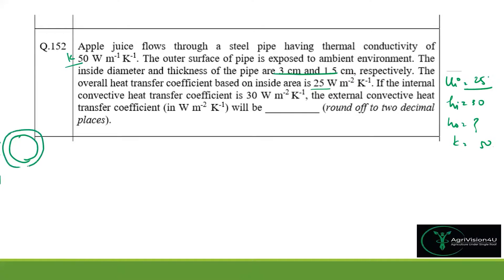The pipe carries apple juice. The inner diameter is 3 cm, so inner radius r_i = 1.5 cm. The wall thickness is 1.5 cm, so the outer radius r_o = 3 cm, giving an outer diameter of 6 cm and inner diameter of 3 cm.